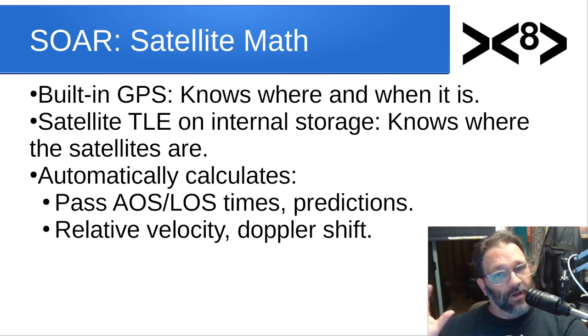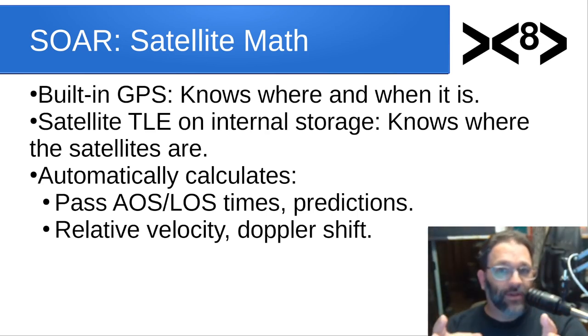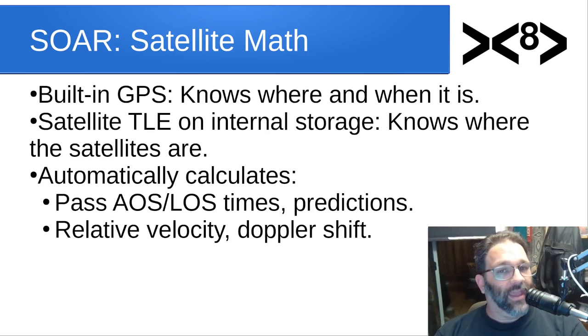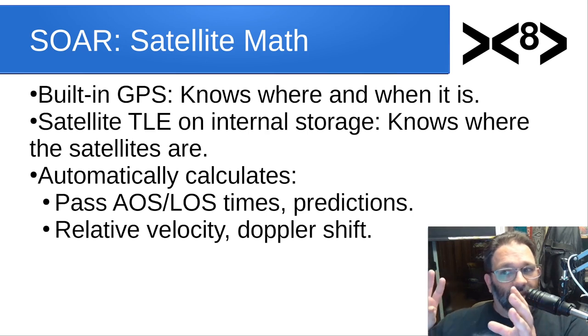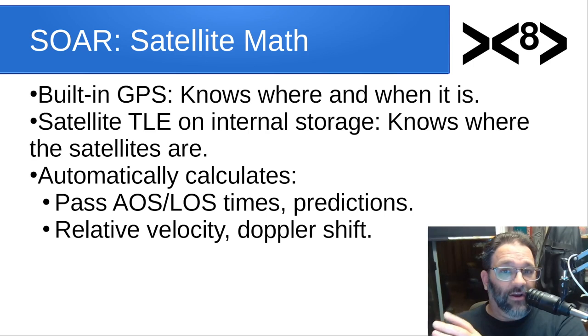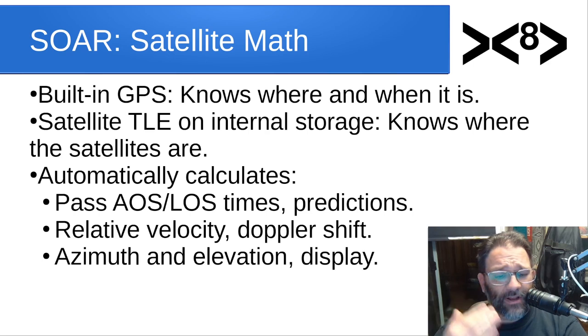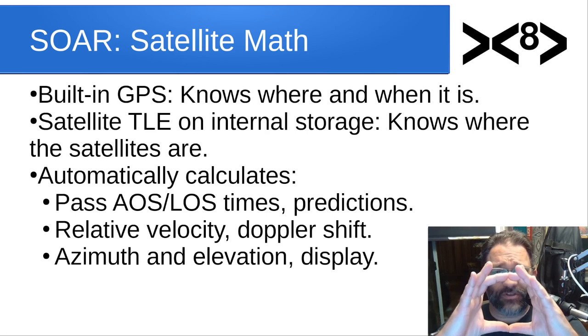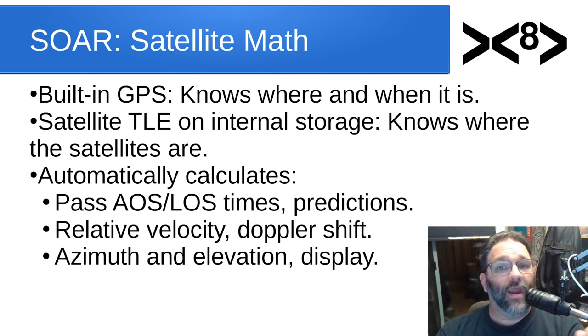It can also calculate relative velocity while the satellite is overhead. And it uses that relative velocity to adjust the frequency of the radio and account for Doppler shift automatically. So you don't have to keep a hand on the channel knobs or the frequency knobs for your radio. All of this is built in. With some of the bigger radios, you can hook up a computer to the radio to control it for you. But you can't do that with HTs. I'm trying to make an appliance. So SOAR, the built-in microcontroller will automatically calculate the relative velocity and adjust the receiver and transmitters for Doppler shift. While we're at it, let's calculate the azimuth and elevation and display those on the screen.